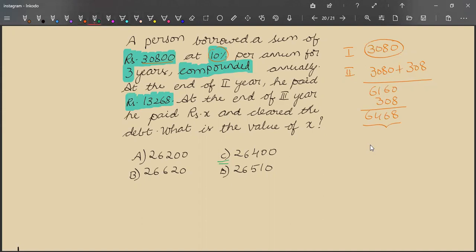30,800 plus 6,468, which is 37,268. But he already paid 13,600. Let us subtract it from 37,268.